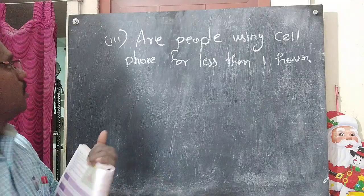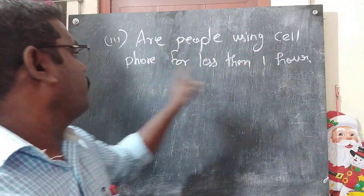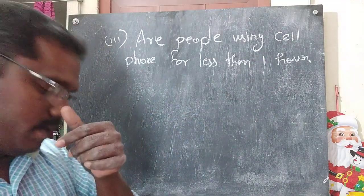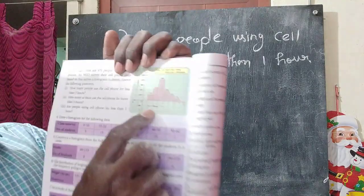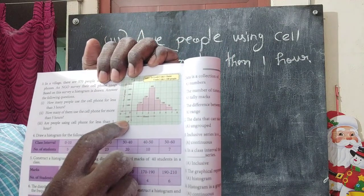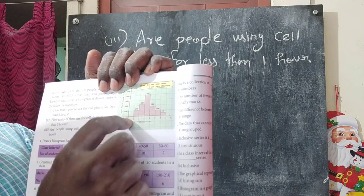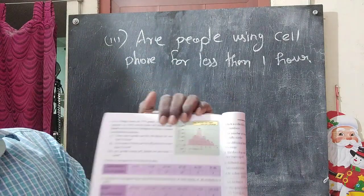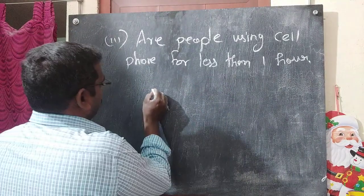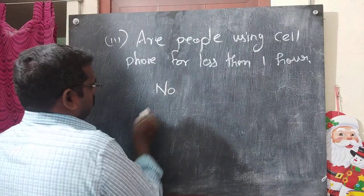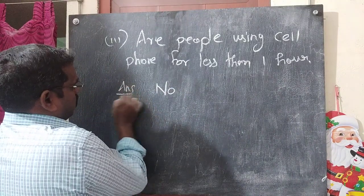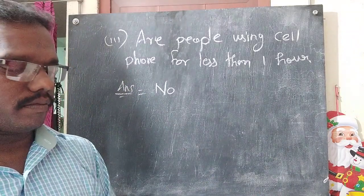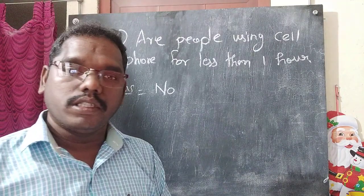Question number 3: how many of them use the cell phone for less than 1 hour? Look at the graph. How many of them use the cell phone for less than 1 hour? The answer is none — zero people use the cell phone for less than 1 hour. Copy down.